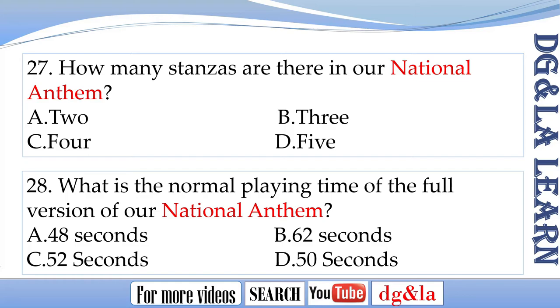Question 27: How many stanzas are there in our national anthem? The options are A. 2, B. 3, C. 4, D. 5.